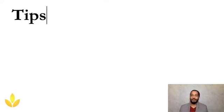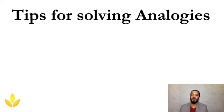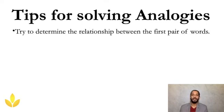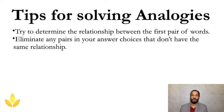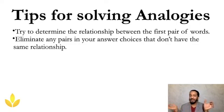Let's take a moment and I'm going to take you through some tips that will help you solve these analogy questions better. First, try to determine the relationship between the first two pair of words. When you get two words, they might have a meaning that can be easily related to the next set. Eliminate any pairs in your answer choices that don't have the same relationship. Once you understand the meaning between the first two words, that's the key — you can just negate some options which don't make any sense.